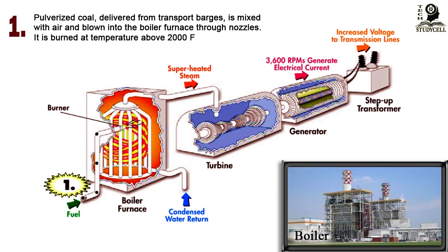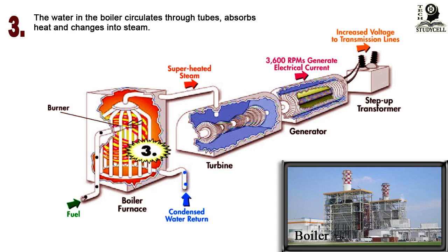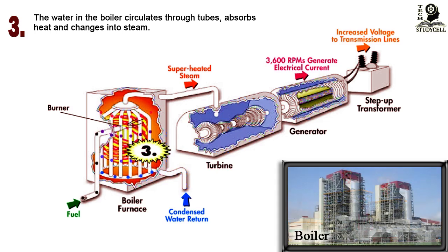The boiler is a rectangular furnace about 50 feet on a side and 130 feet tall. Its walls are made of a web of high-pressure steel tubes about 2.3 inches in diameter. Here, the chemical energy in coal becomes heat energy when the coal is burned in the furnace, and the water in the boiler circulates through tubes, absorbs heat, and changes into steam.